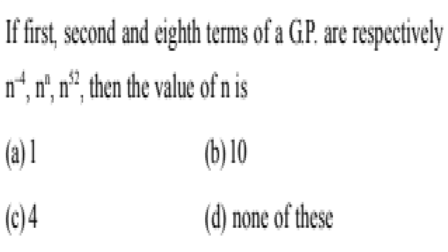Hello friends. As you are able to see, the second question: the first, second, and eighth term of the GP are n to the power minus 4, n to the power n, and n to the power 52 respectively. We need to find the value of n. Now let us start solving this question.